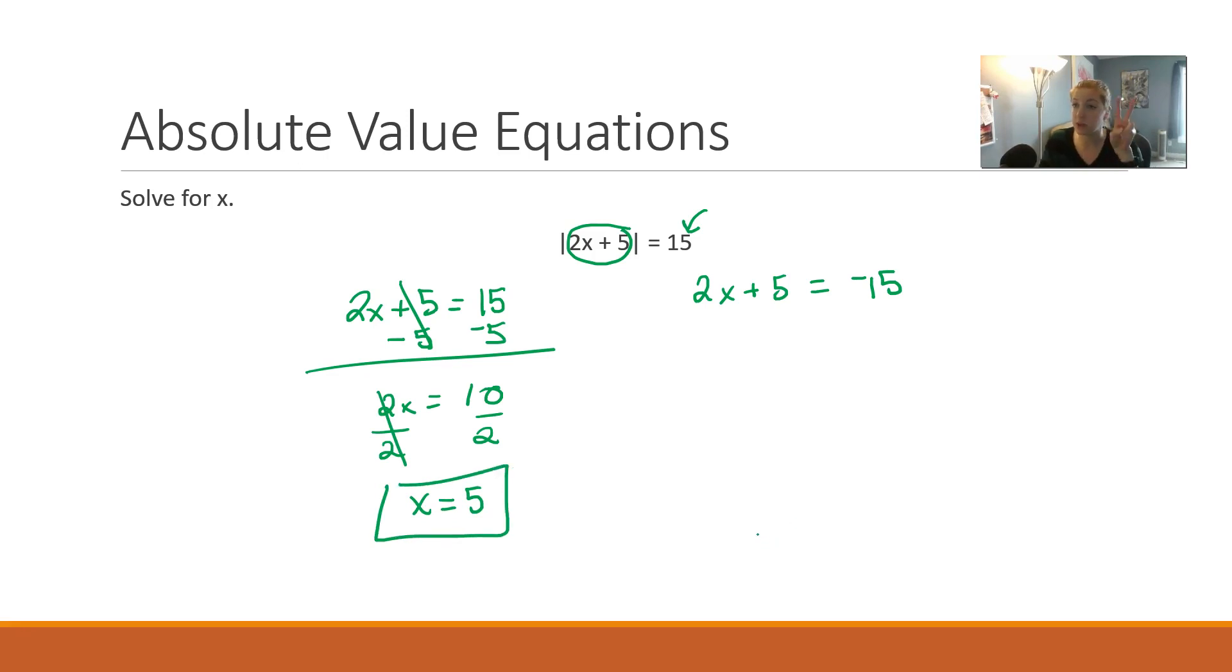But remember I said there's usually two answers. In this case, there will be. Subtract 5 again. You're going to be doing the same operations on either side. Negative 20. Divide both sides by 2. You get x equals negative 10. I have two answers.